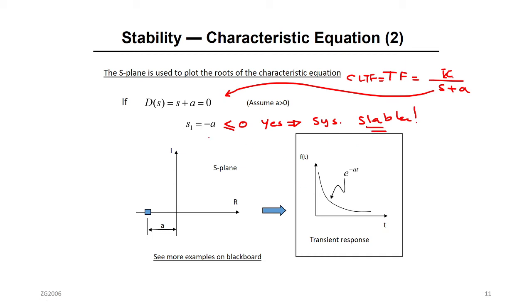If you want to solve using MATLAB or sketch it — this is a first-order system — you check the initial value and the final value. You will see a decaying exponential. What does a decaying exponential mean? Is it going to a certain value — converging — or going to infinity — diverging? It's going to a certain value and staying there, so it's stable. Without drawing, just check the real part: if your real part is negative, the system is stable. Even if it's zero, it's going to be stable.